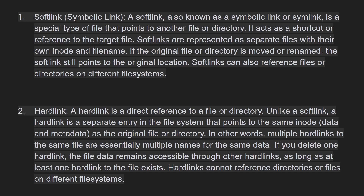A hard link is a direct reference to a file or a directory. Unlike a soft link, a hard link is a separate entry in the file system that points to the same inode, data, and metadata as the original file. In other words, multiple hard links to the same file are essentially multiple names for the same data. If you delete one hard link, the file data remains accessible to other hard links as long as at least one hard link to the file exists. Hard links cannot reference directories or files on a different file system.